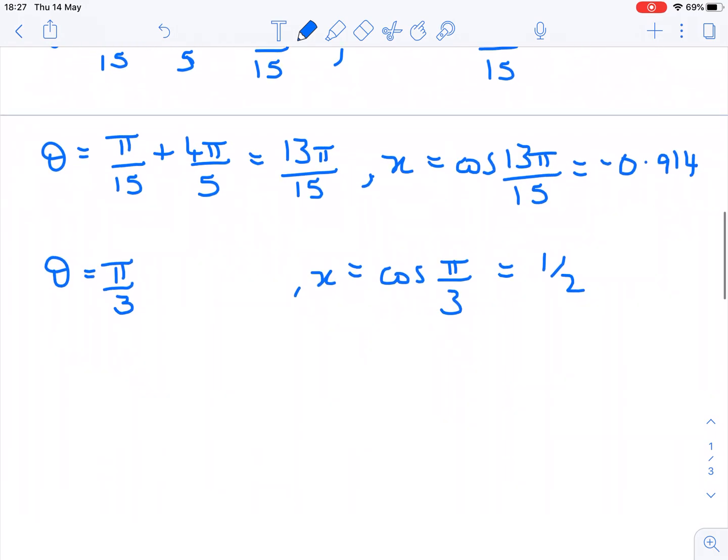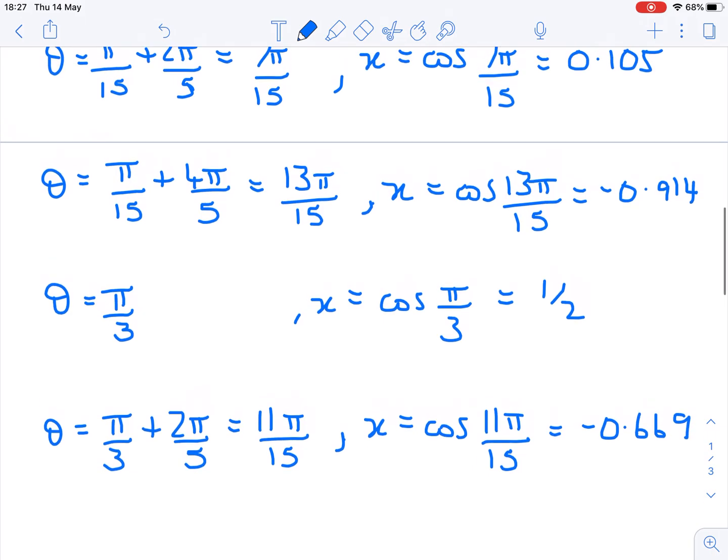Now that π/3 solution also recurs every 2π/5. So my next possible value for θ is π/3 + 2π/5, giving me a solution at 11π/15, a solution for θ. My solution for x is at the cosine of 11π/15, negative 0.669.